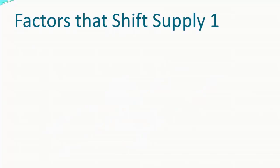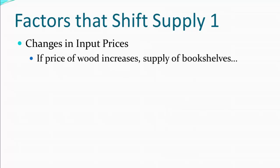Now let's turn to the factors that result in these kinds of shifts. The first is any change in input prices. An input is just something you use to make something else. For example, suppose that the price of wood increases — what would that do to the supply of wooden bookshelves? We need to think about it from the supplier's perspective. If the cost of producing the thing goes up, it's going to be less profitable for me to do it, so I'm not going to produce as much as I did before. We'd say the supply decreases.